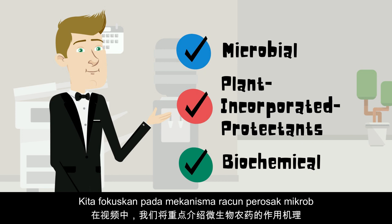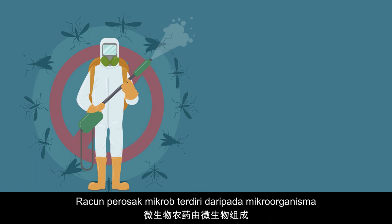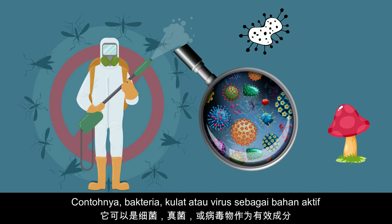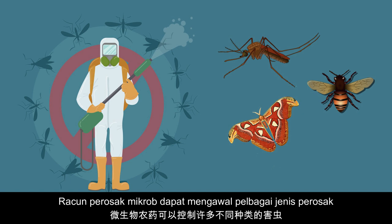Microbial pesticides consist of a microorganism — it can be a bacterium, fungus, or virus — as the active ingredient. Microbial pesticides can control many different kinds of pests, and each active ingredient is relatively specific for its target pests.